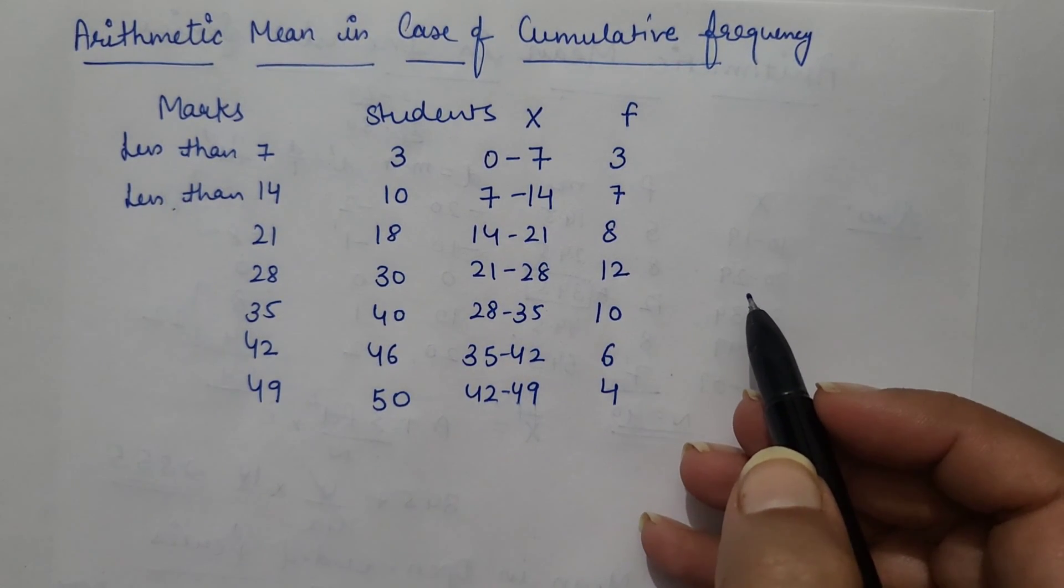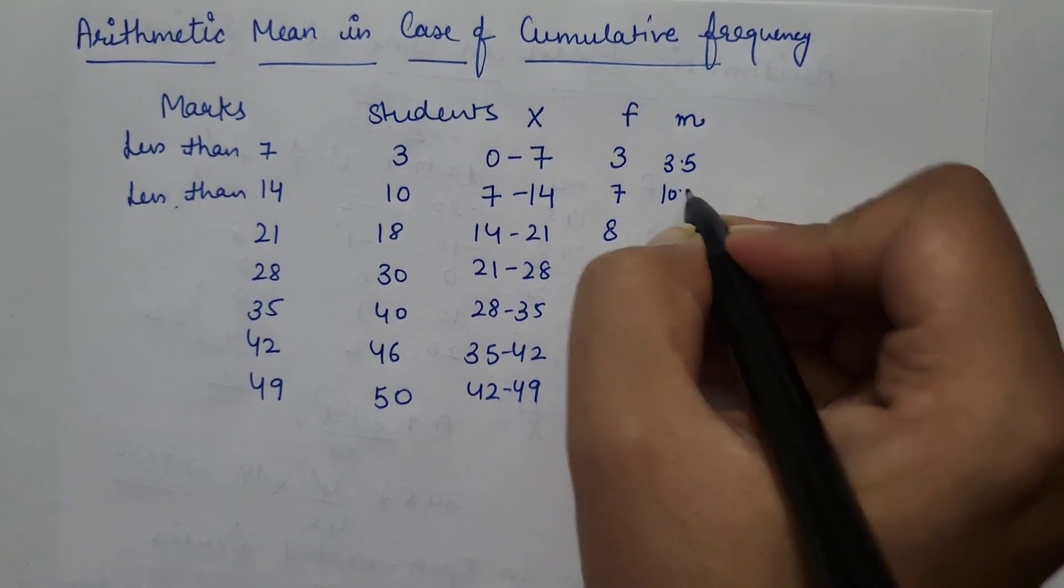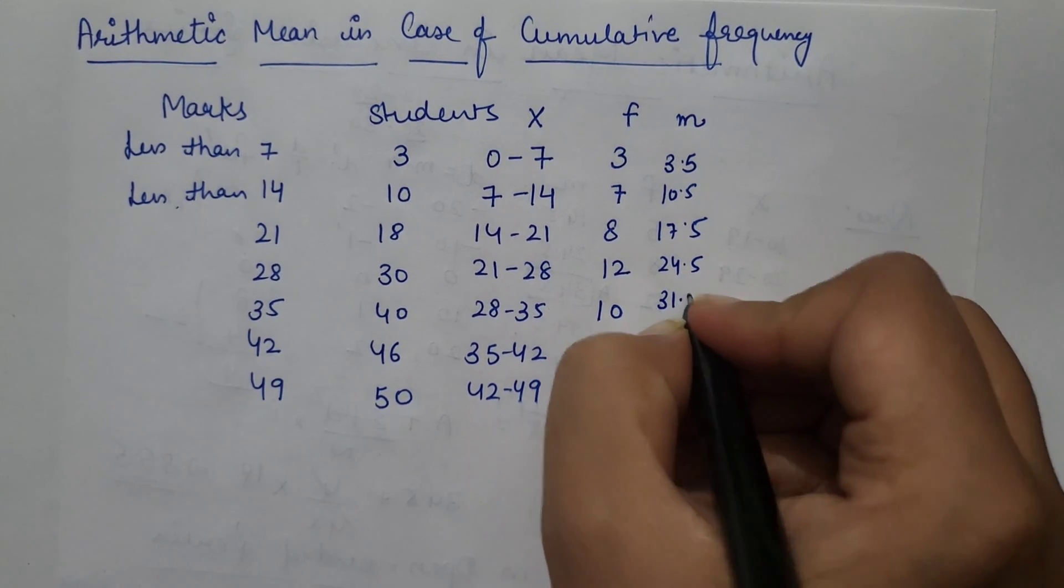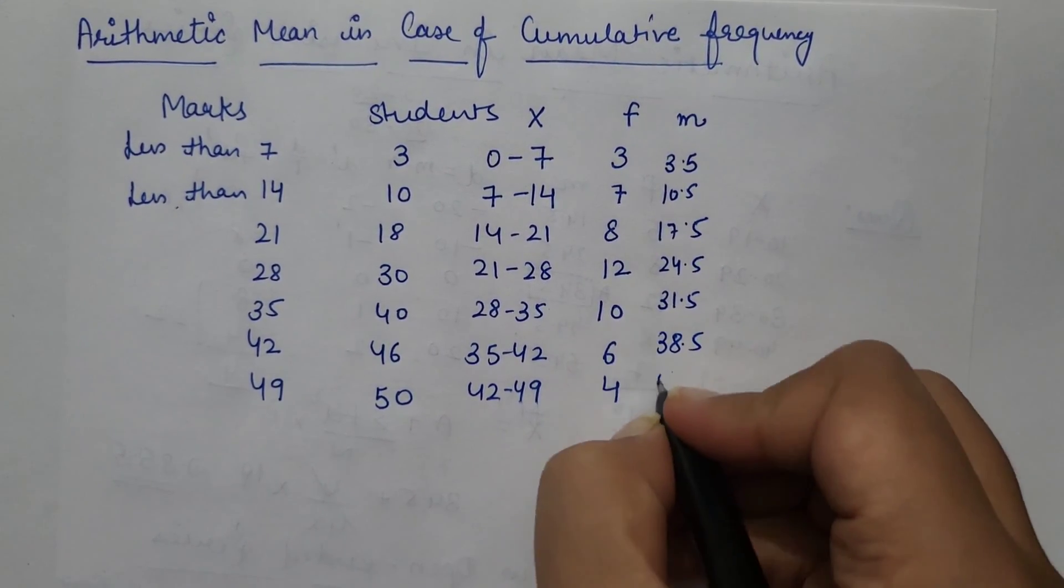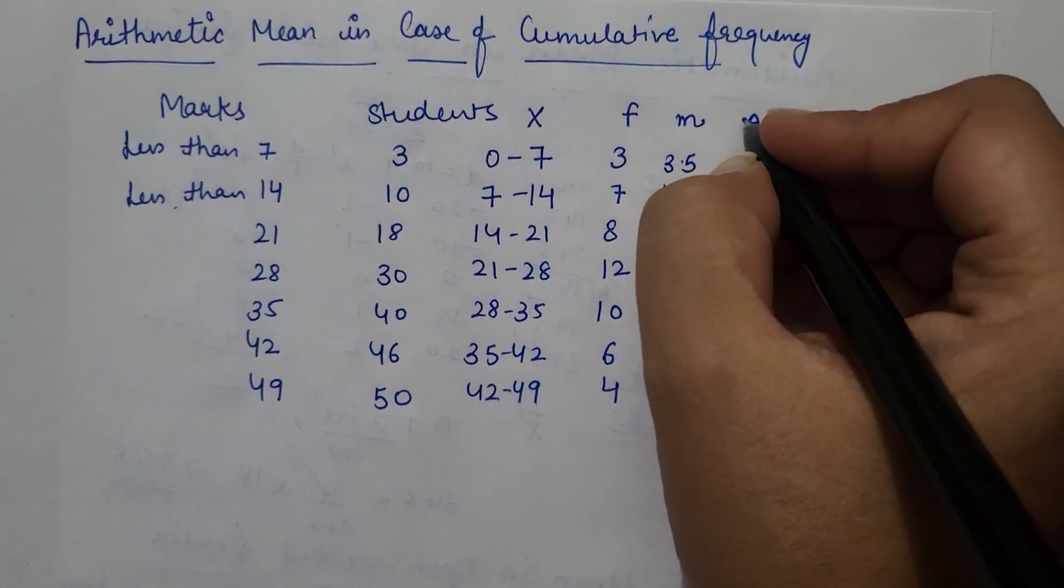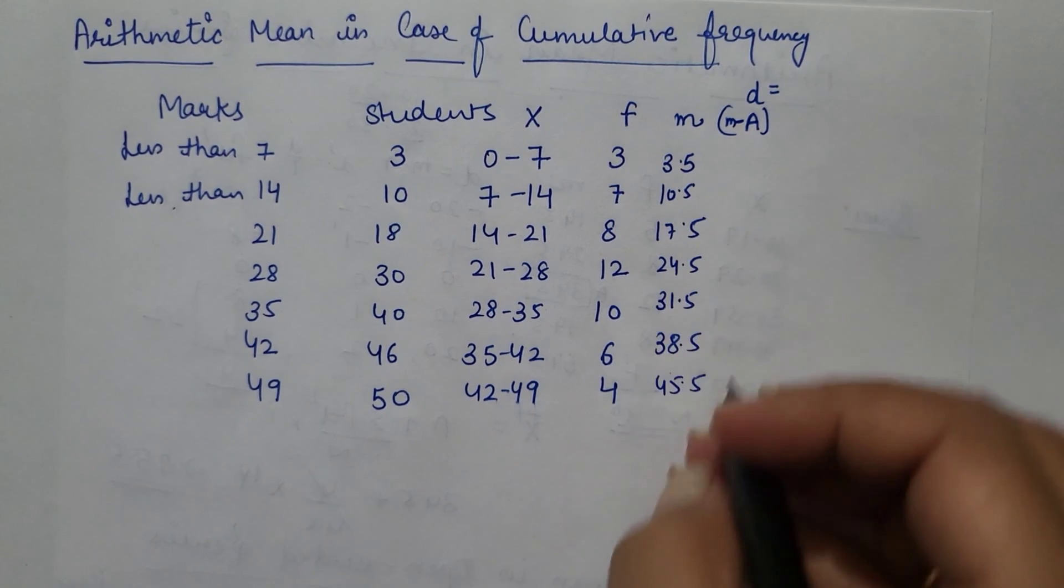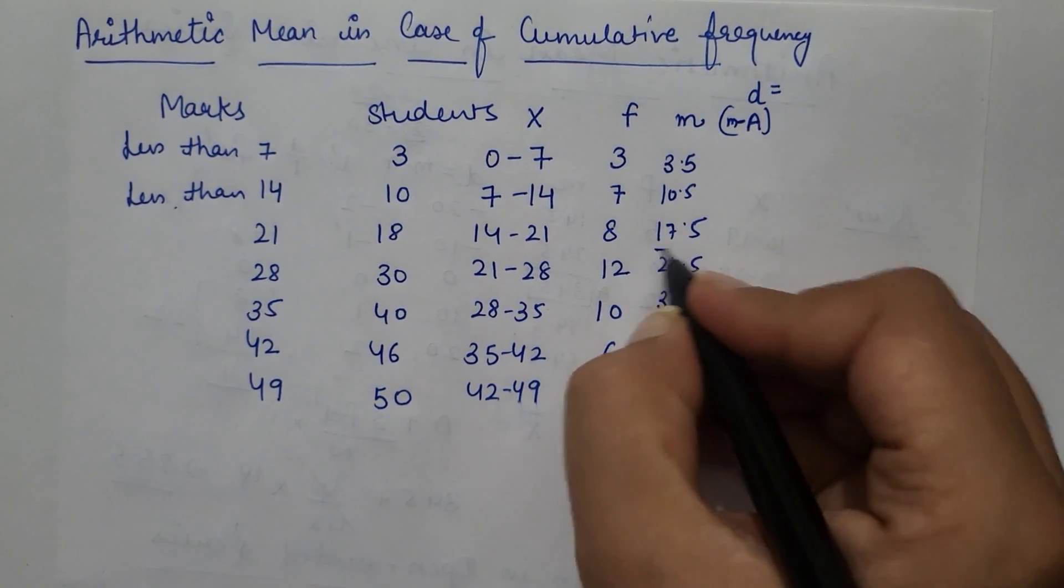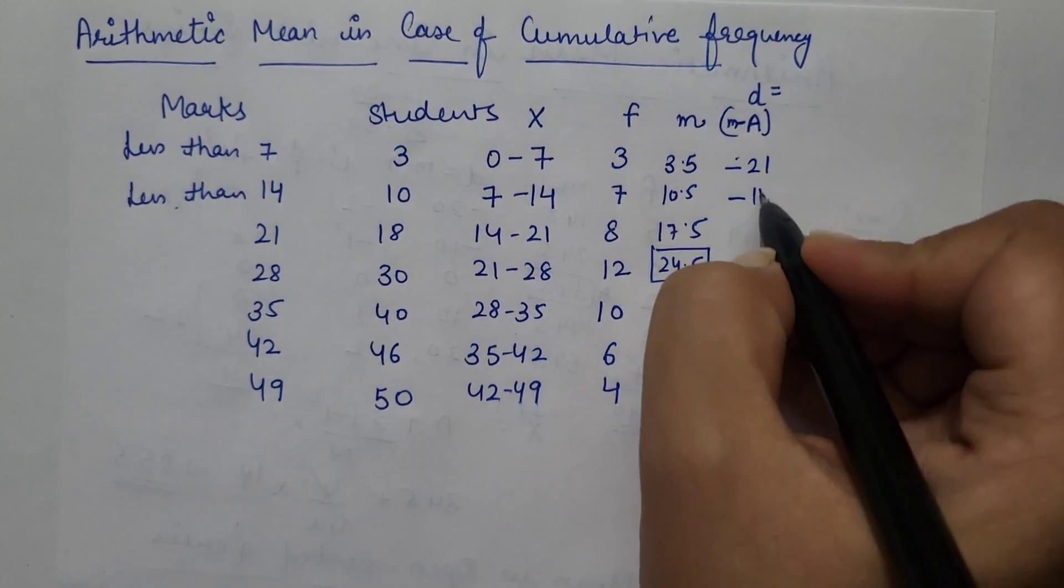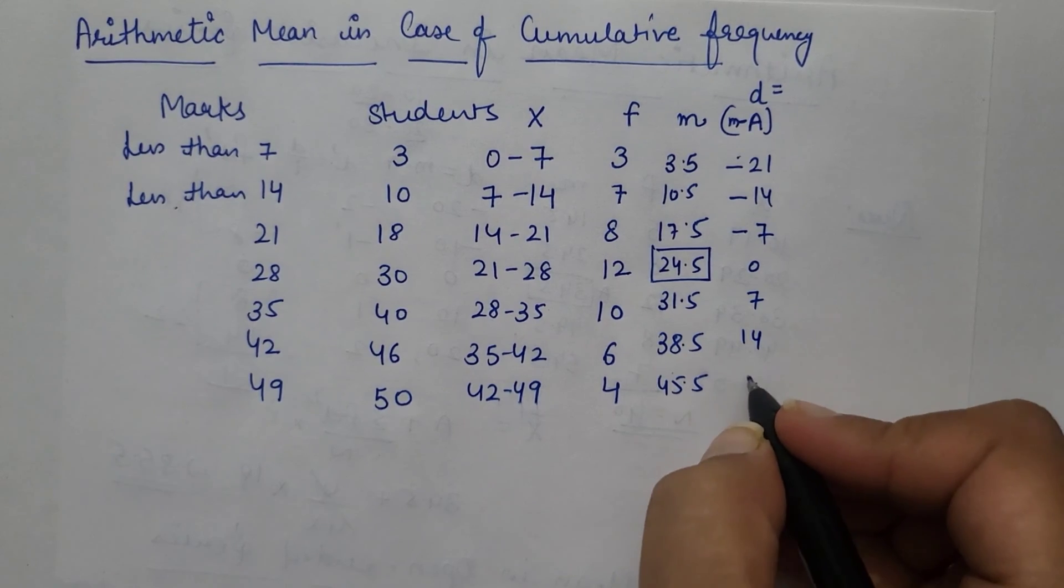Now we can calculate mean. Mid-value can be calculated 3.5, 10.5, 17.5, 24, 31, 38, and 45. So we can assume and subtract from mid-value, that is deviations. So for that, I am taking 24.5 as assumed mean. So difference would be minus 21, 14, 7, 0, again 7, 14, 21.